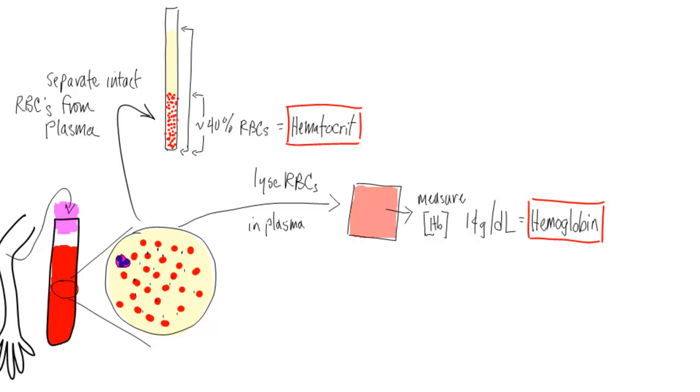The hematocrit and hemoglobin are very tightly correlated. For all practical purposes, if one is up, down, or normal, the other is up, down, or normal. In anemic patients, both hematocrit and hemoglobin are low. As a clinician, you will usually be given both values.